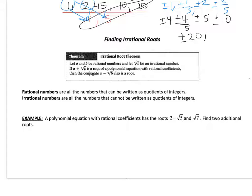Second theorem is the irrational root theorem. So if a and b be rational numbers and the square root of b being a rational number, if a plus root b is a root, then the conjugate is the root. So remember this is a conjugate.